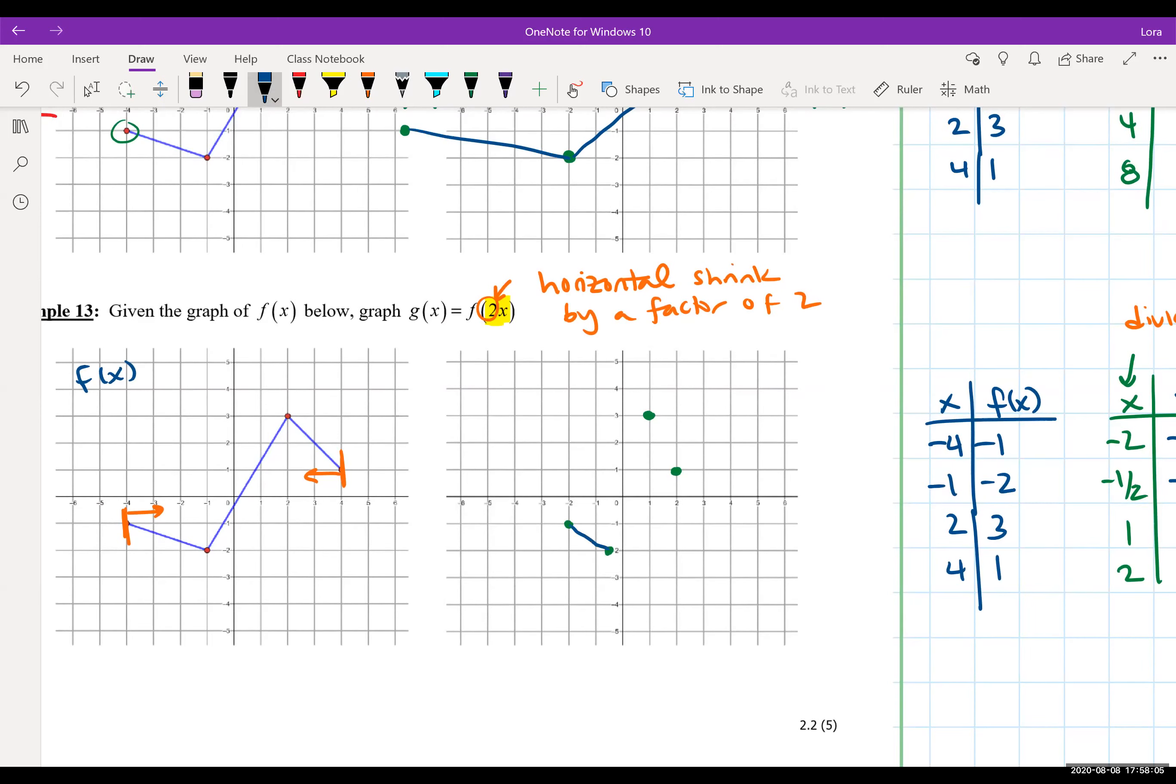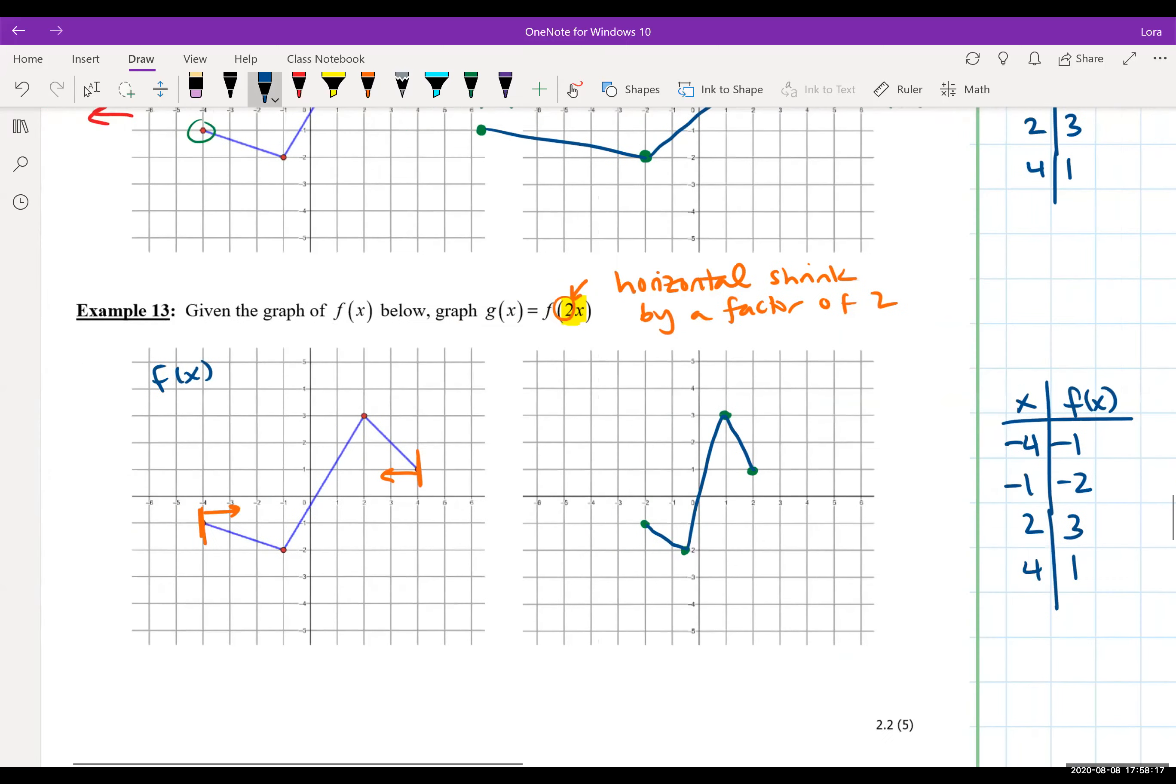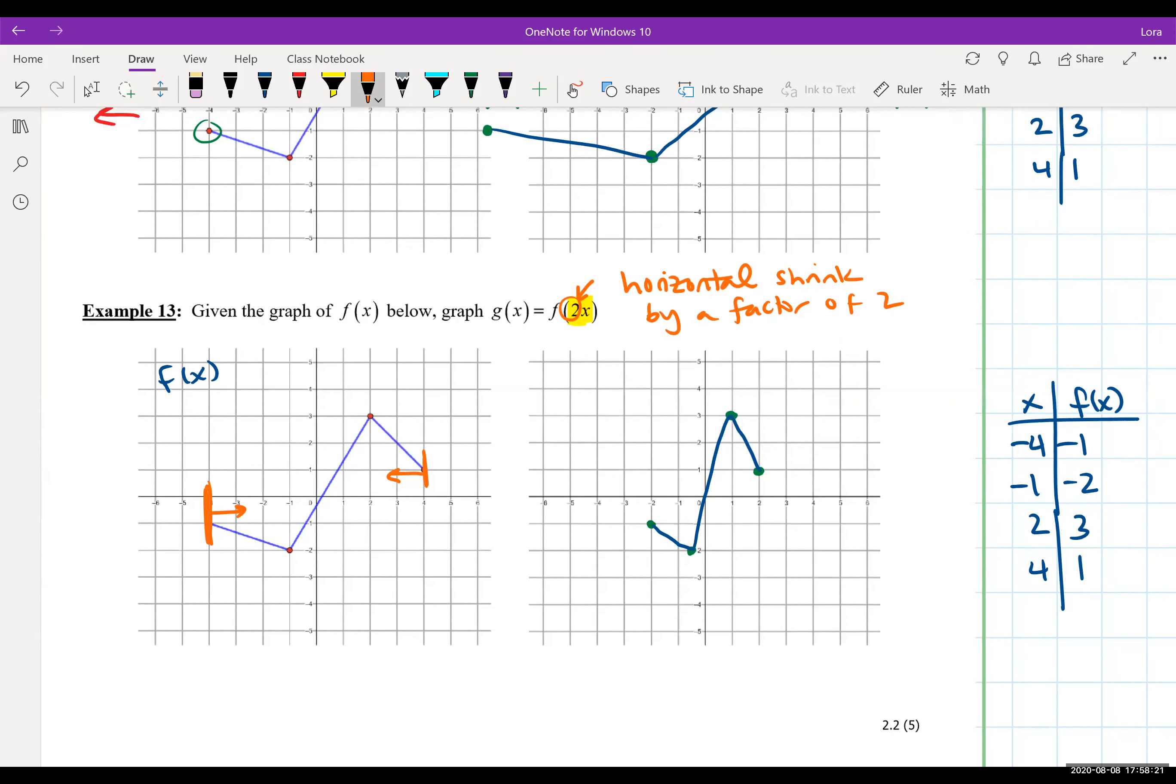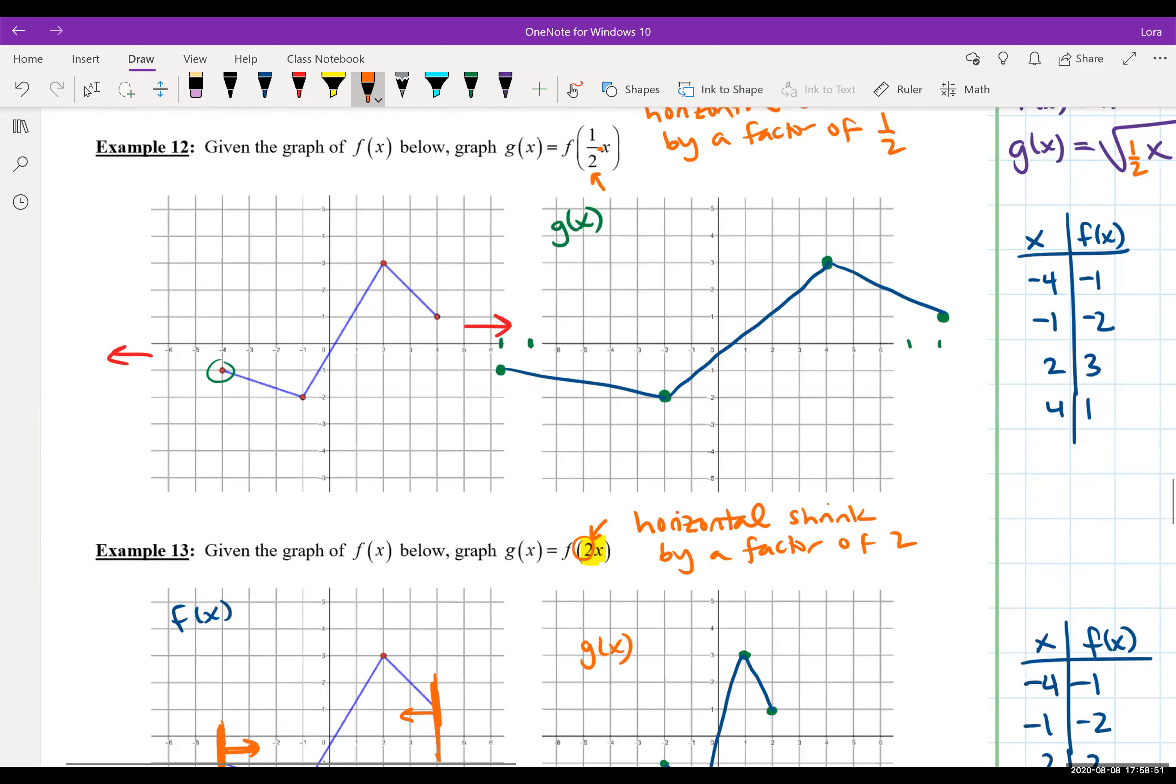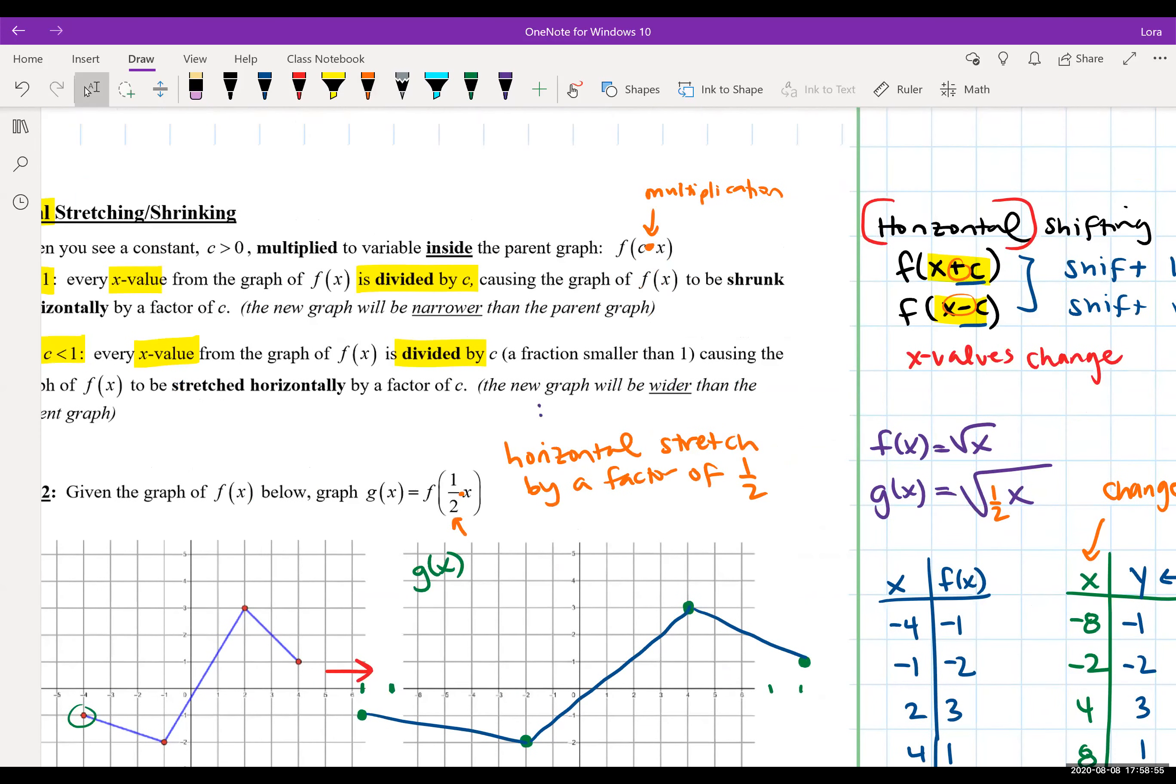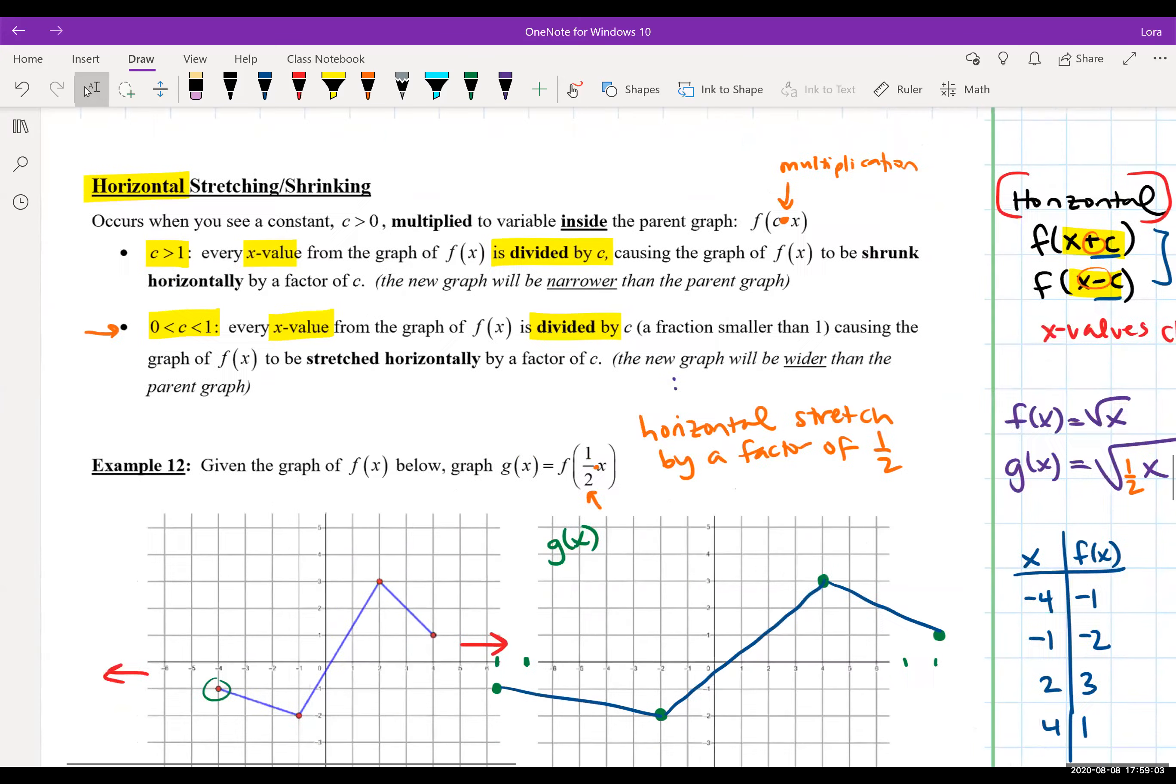And we're going to connect our line segments pretty much trying to follow the original pattern. So now you kind of can see, if I were to compress the edges of my function, if I took my two hands and I squeezed the function, I would end up getting the g of x. And so that's what it means to horizontally compress. What I really focus on is horizontal transformations always affect the X values and vertical transformations always affect the Y values. That's the kind of thing I want you to pick up on.